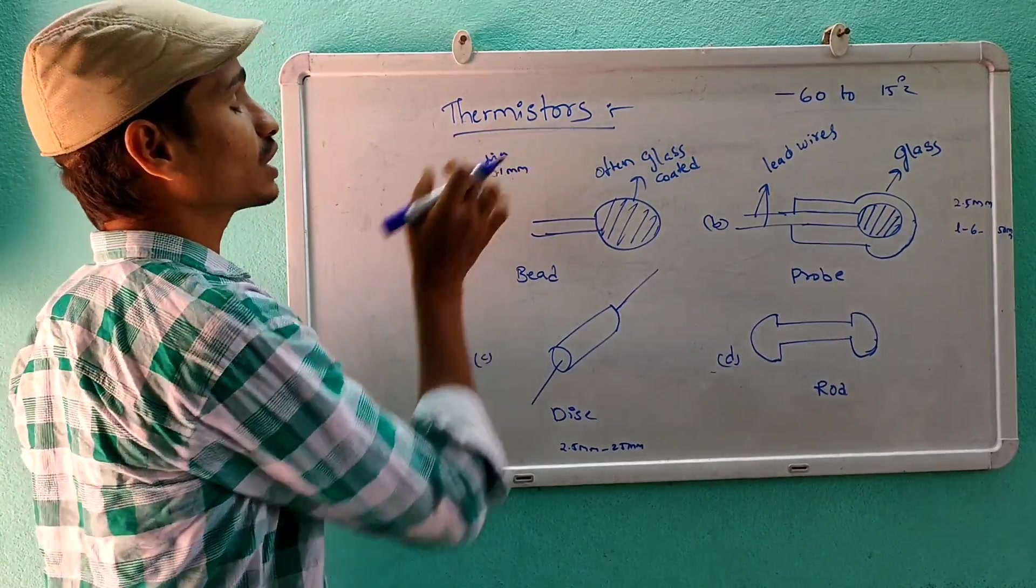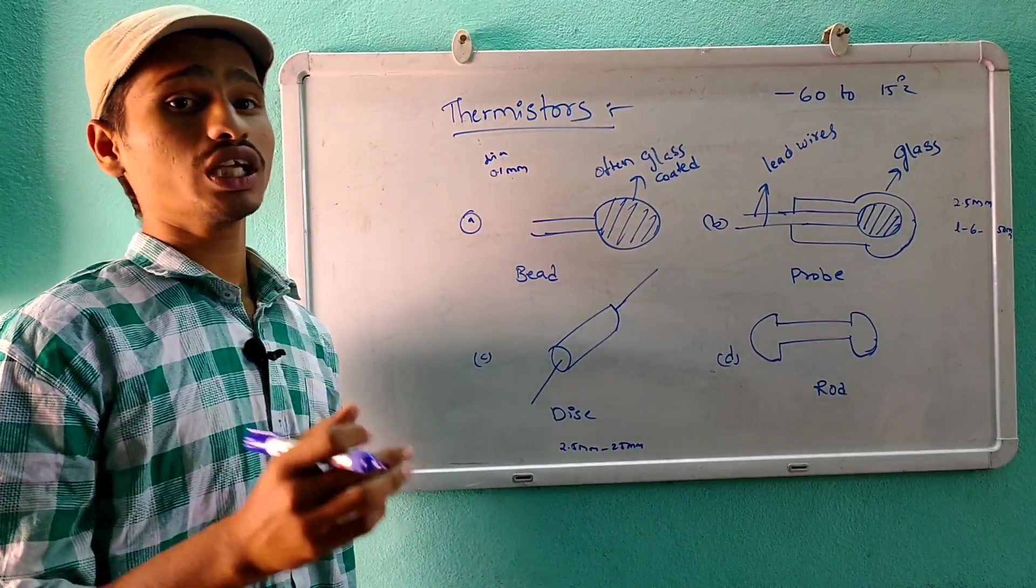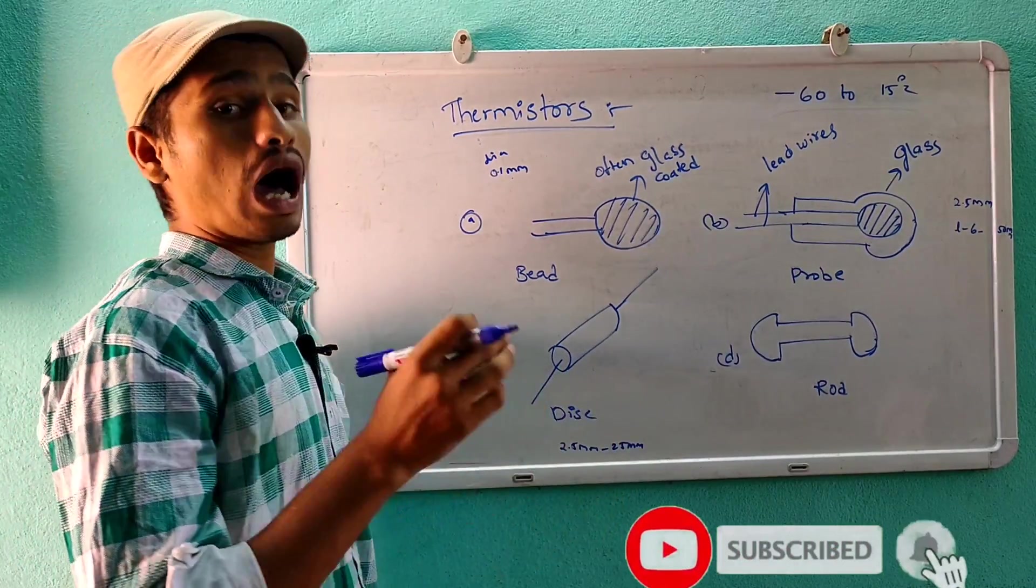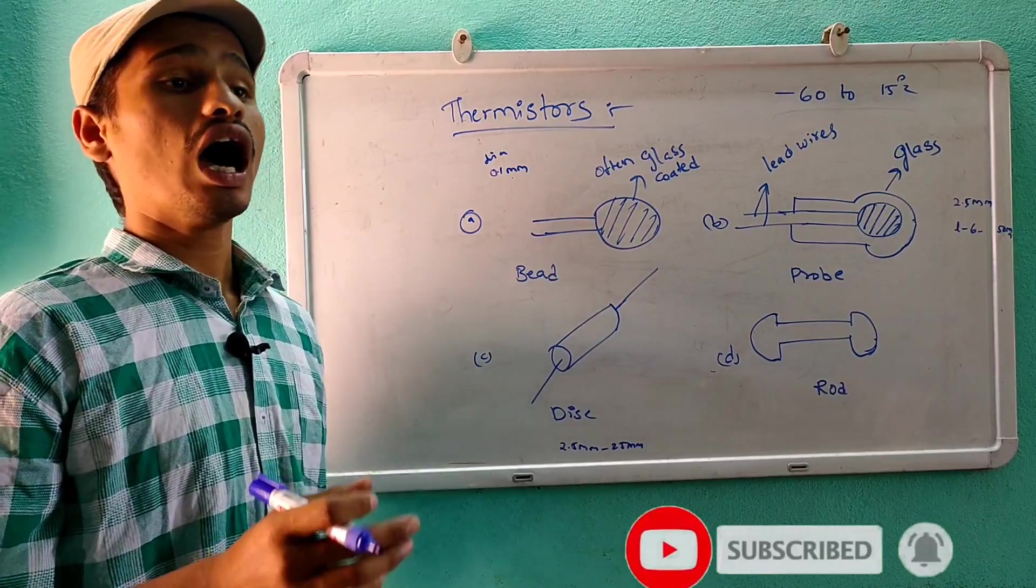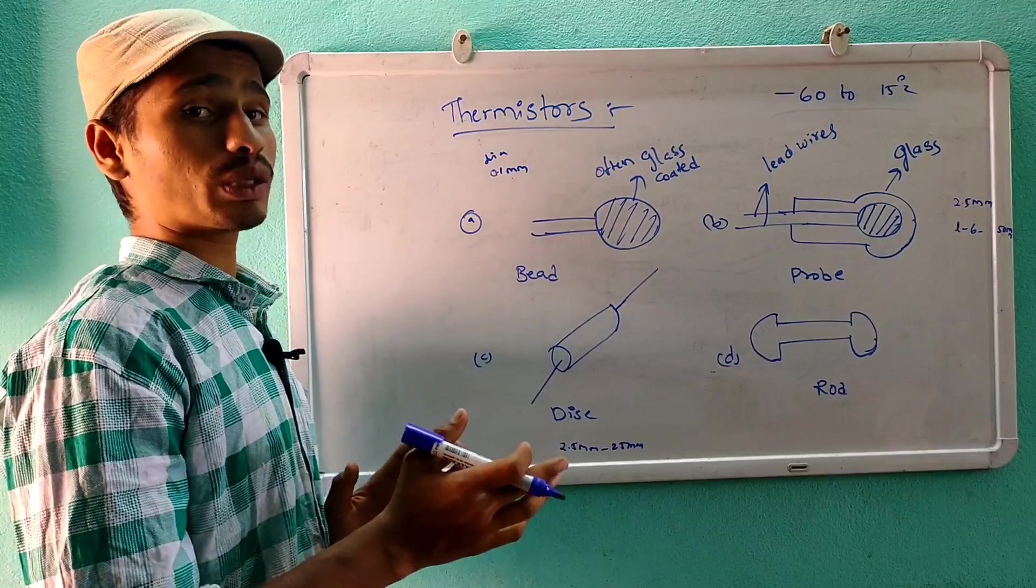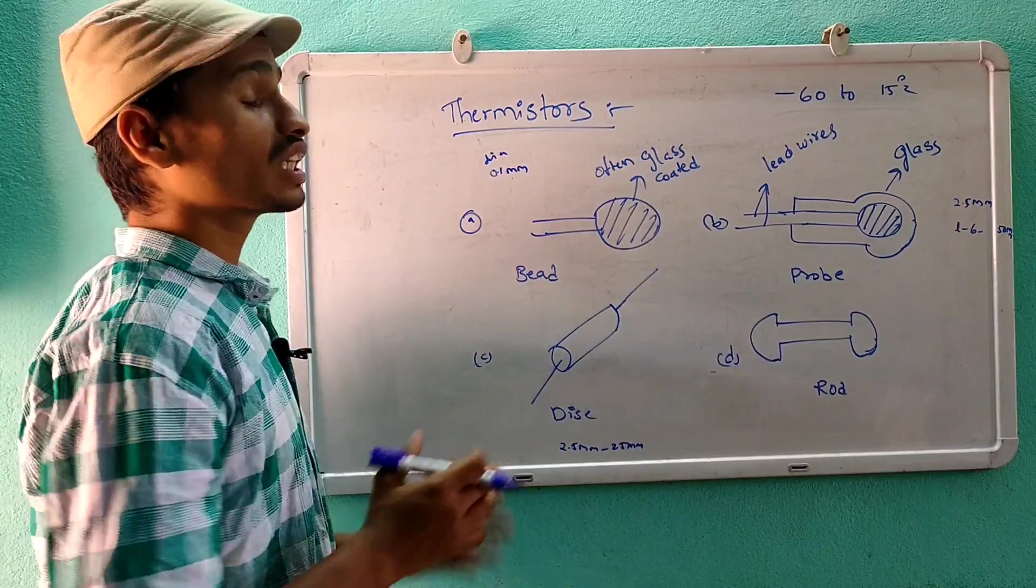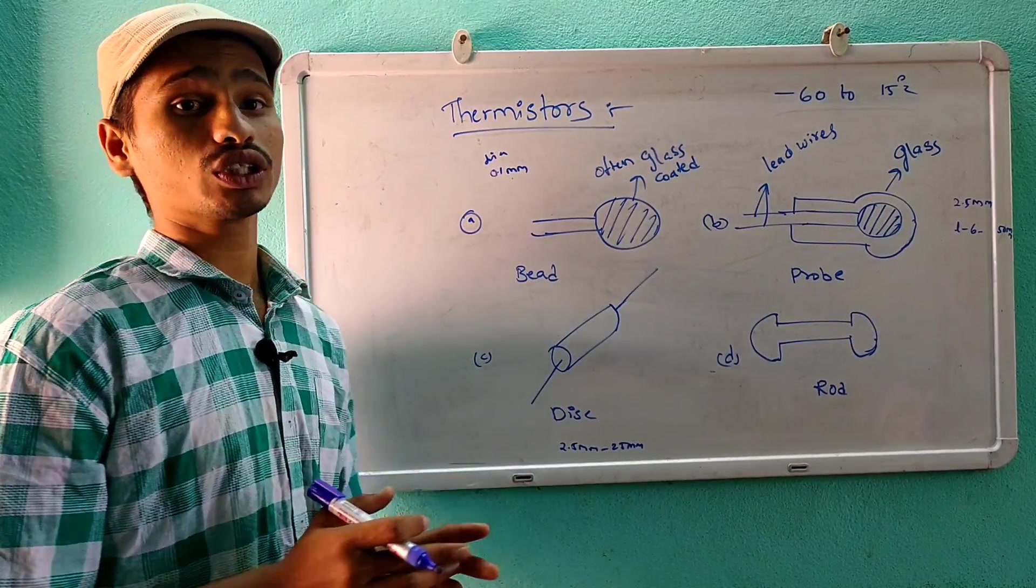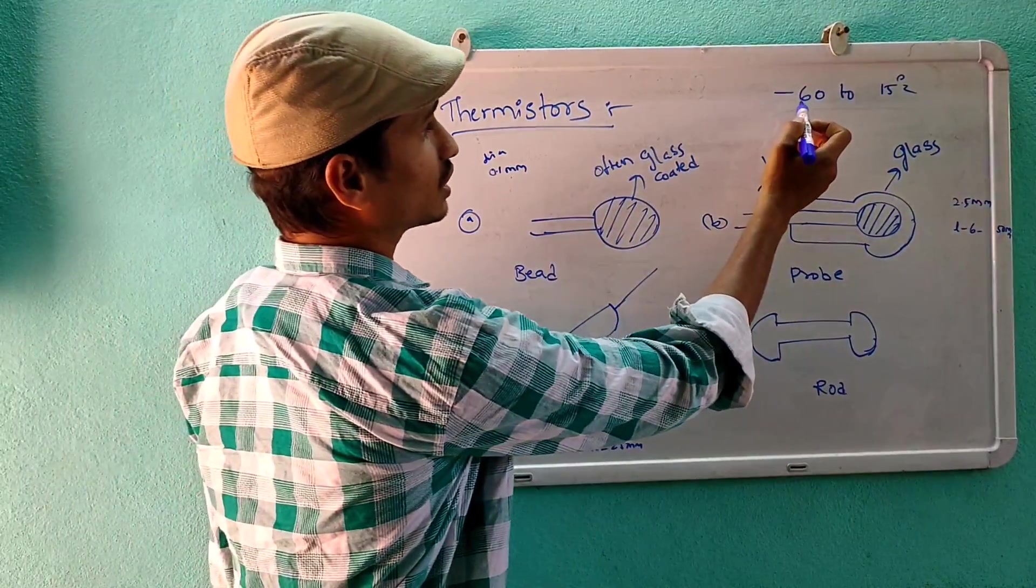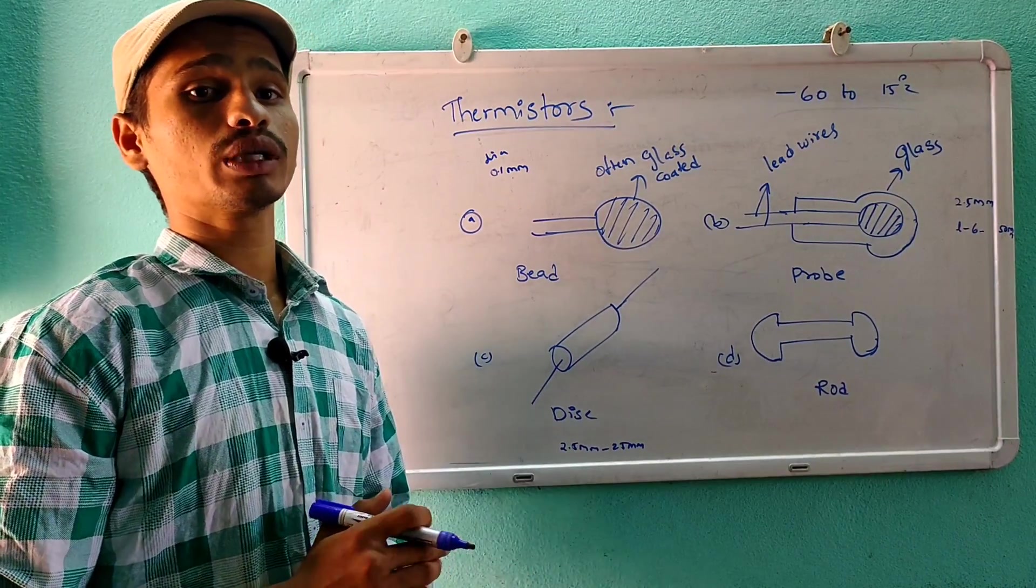In thermistors, when temperature increases, the resistance of the material decreases. This is negative temperature coefficient. Thermistors are used to measure temperature using this resistance variation property.